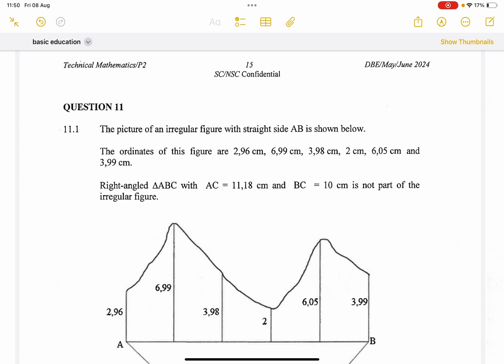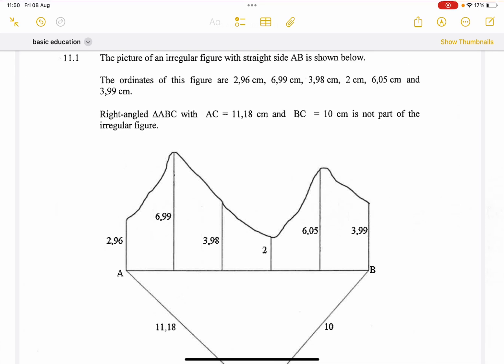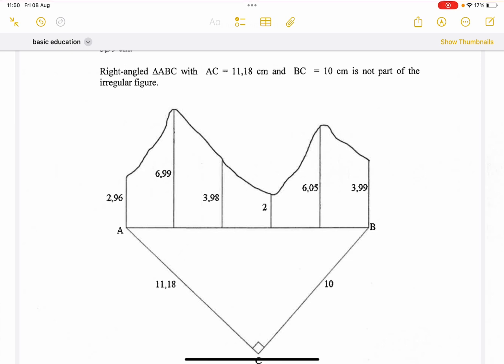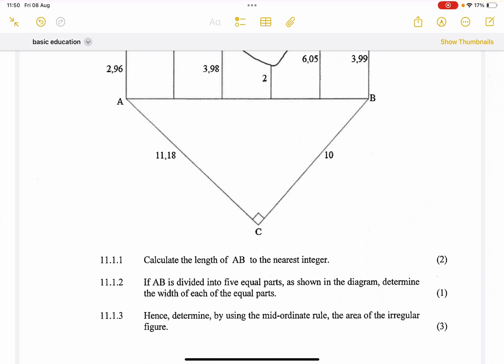They say to us, the picture of an irregular figure with straight side AB is shown below, and the ordinates of the figure, we can see them, that's 2.96, that's going to be the next one, 6.99 and 3.98 and so on. Now they say to us, right angled triangle ABC with AC equal to 11.18 and BC 10 centimeters is not part of the irregular figure.